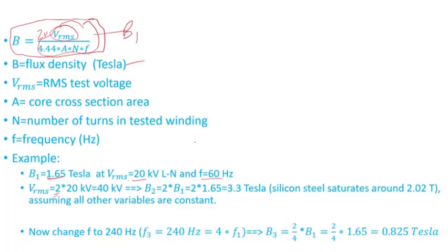So two times B₁ is 3.3 Tesla. Silicon steel saturates around 2.02 Tesla. That means this here will cause the core to saturate and cause problems—basically overheating and other things. Assuming the other variables are the same, which means the cross-section area and the number of turns are the same...